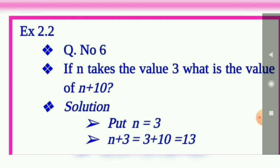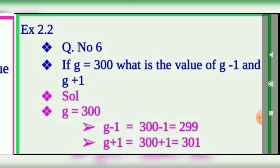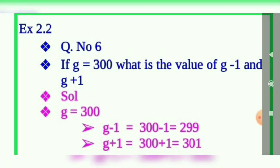Substitute n equals 3 in the equation n+10. So n equals 3, so 3+10. What is the answer? 13. Next, g equals 300. What is the value of g minus 1 and g plus 1?